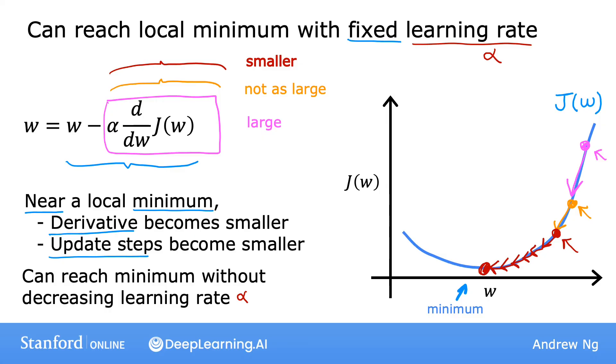So that's the gradient descent algorithm. You can use it to try to minimize any cost function j, not just the mean squared error cost function that we're using for linear regression. In the next video, we're going to take the function j and set that back to be exactly the linear regression model's cost function, the mean squared error cost function that we had come up with earlier. And putting together gradient descent with this cost function, that will give you your first learning algorithm, the linear regression algorithm.